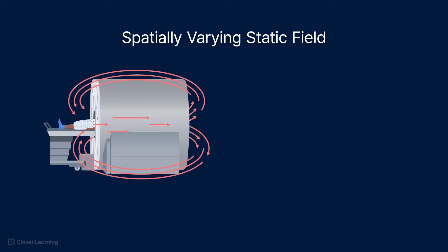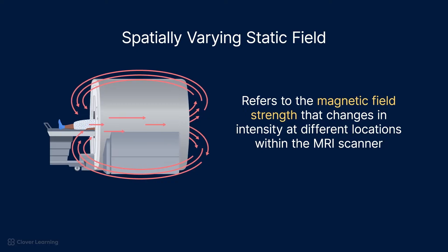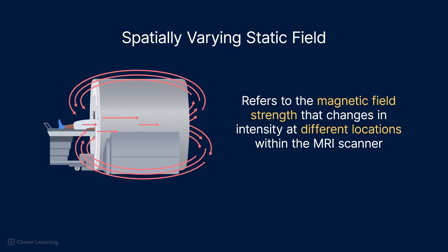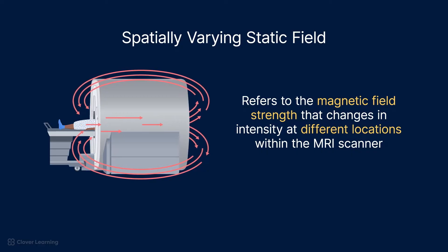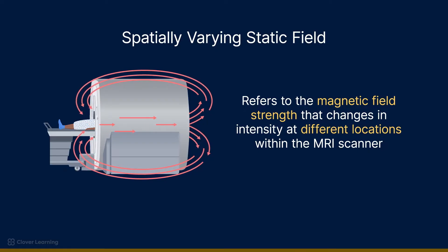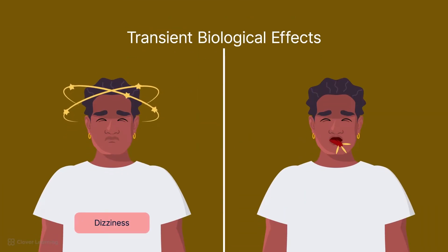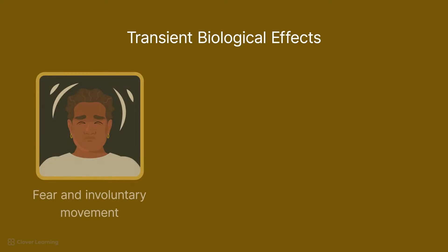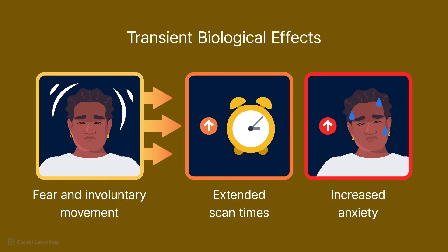The spatially varying static field in MRI refers to the magnetic field strength that changes in intensity at different locations within the MRI scanner. As the patient moves through the MRI bore, they experience these variations, which can induce electrical currents in the body and cause transient biological effects such as dizziness or a metallic taste. While these effects are usually temporary and not harmful, they can cause fear and involuntary patient movement, leading to extended scan times and increasing patient anxiety.